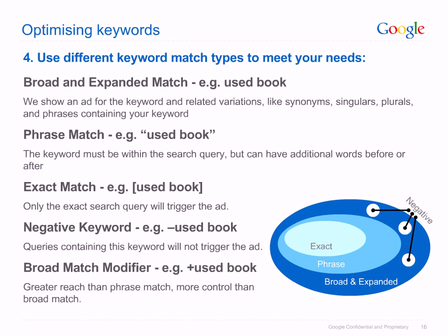Negative keywords are a core component of a successful keyword list. Adding a negative keyword to your ad group or campaign means that your ads won't show for search queries matching that term. By filtering out unwanted impressions, negative keywords can help you reach the most appropriate prospects, reduce your cost per click (CPC), and increase your ROI. Broad match modifier provides greater reach than phrase match but more control than broad match. Words in a broad match keyword preceded by a plus must be in the query exactly or as a close variant — synonyms don't match.